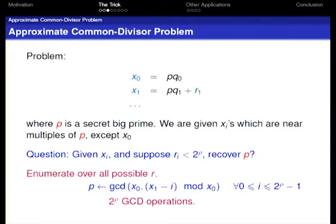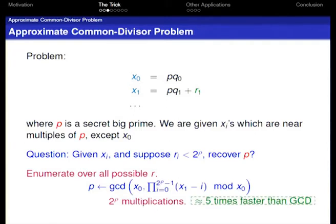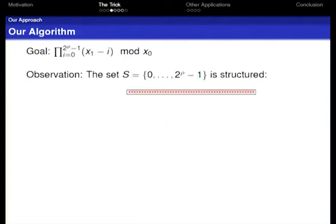We can first calculate the product over all candidate values, and then do one final GCD operation. Instead of doing many GCD operations, we do multiplications followed by a single GCD, which is already five times faster. The most important part of our algorithm is the big improvement we achieve in calculating this product.